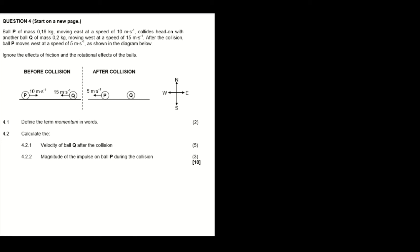In this question, we are given ball P which has a mass of 0.16 kilograms moving in the east direction at a velocity of 10 meters per second. It collides with ball Q that has a mass of 0.2 kilograms moving in the west direction at a speed of 15 meters per second. After the collision, ball P moves in the west direction at a speed of 5 meters per second, as shown in the diagram here.